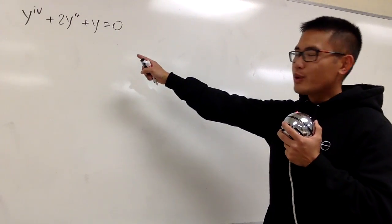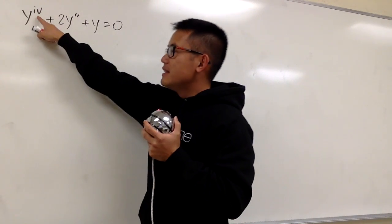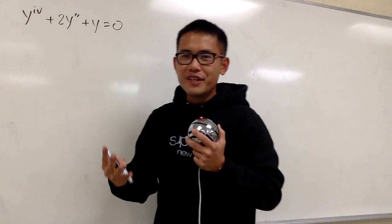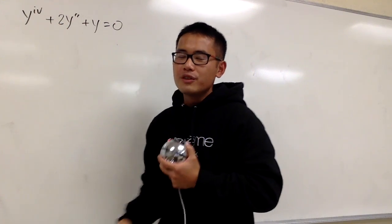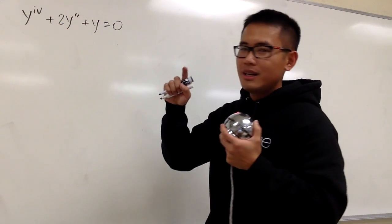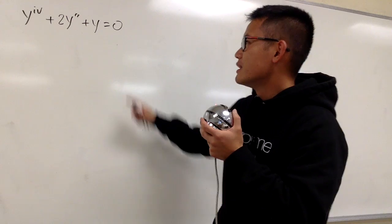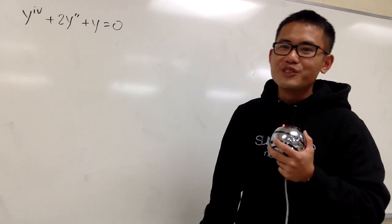Okay, I'm going to show you guys how to solve this differential equation. Notice that this is just going to be the fourth derivative. This is just another notation for the fourth derivative, so they use the y with four marks. Anyways, you know this is the linear differential equation with constant coefficients.